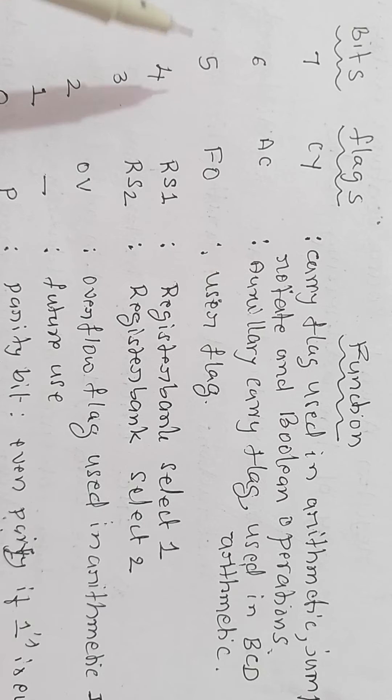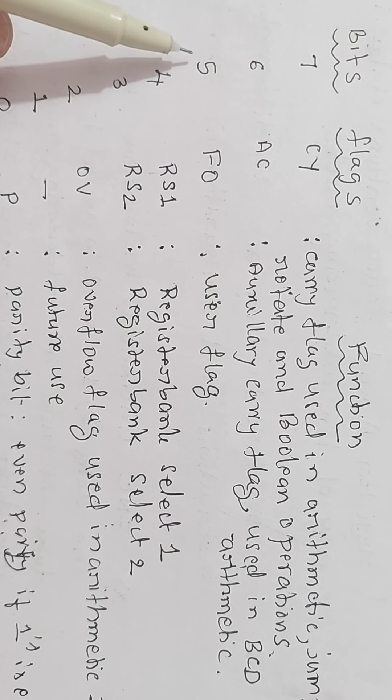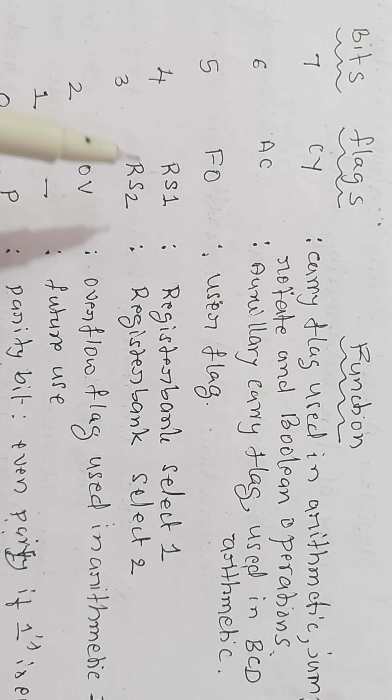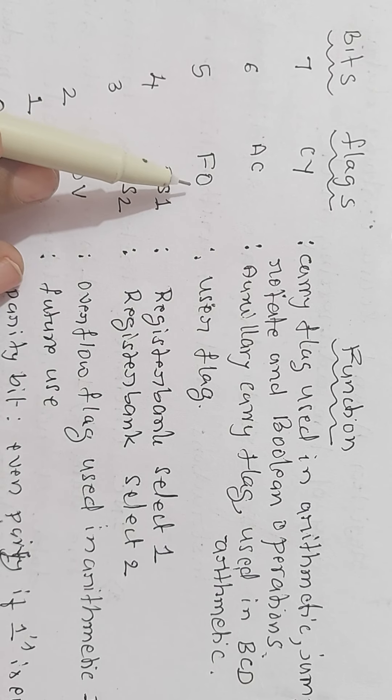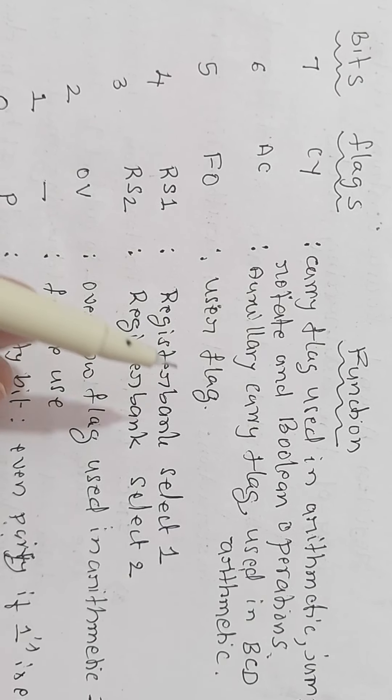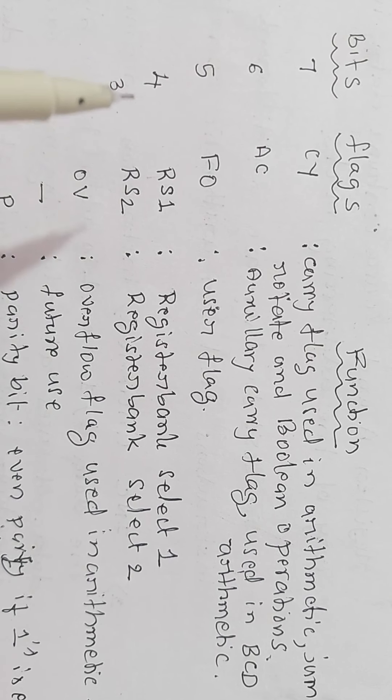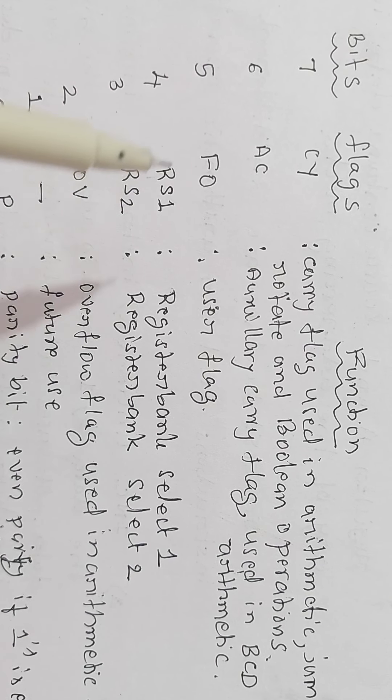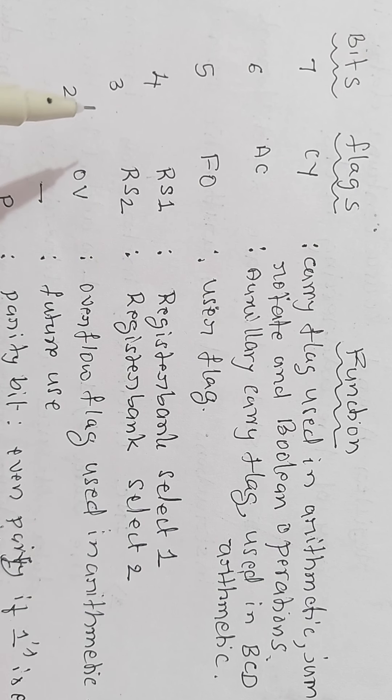Similarly, the program status word 5th bit is F0. F0 is nothing but user's flag. User can either set this flag to 1 or you can clear it to 0.